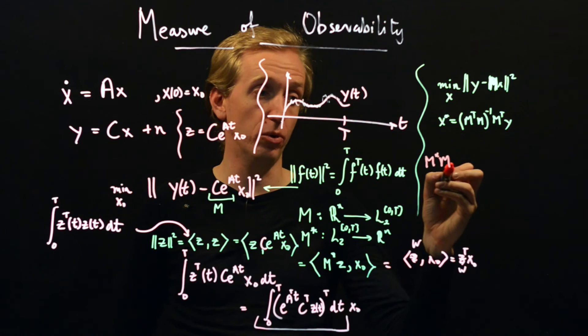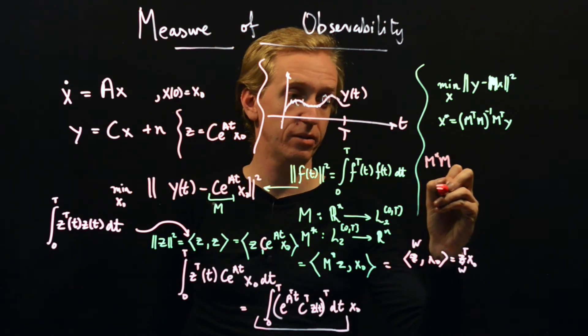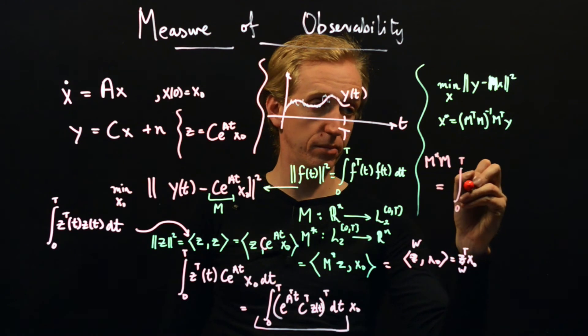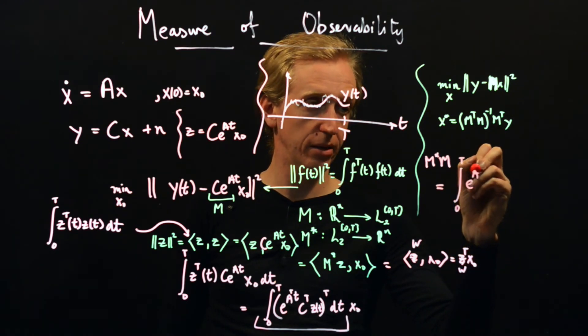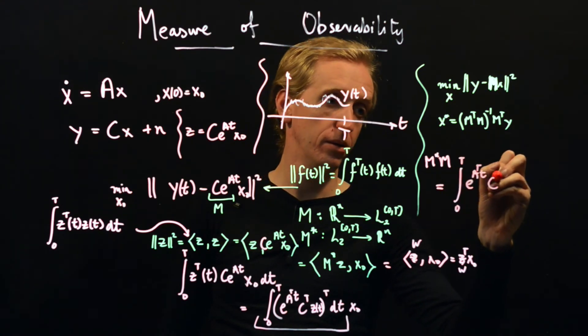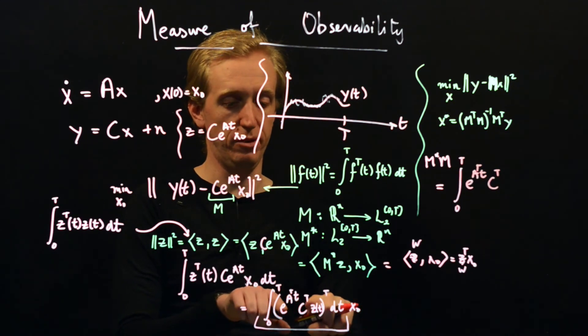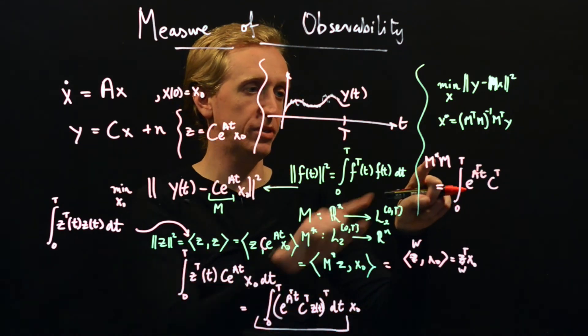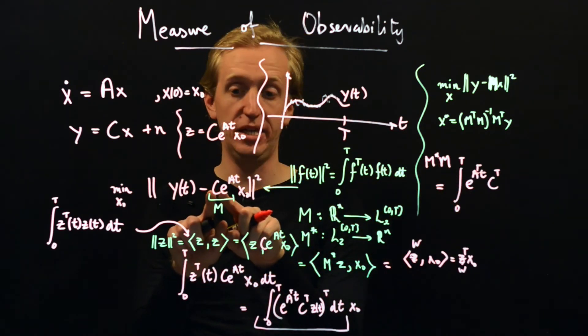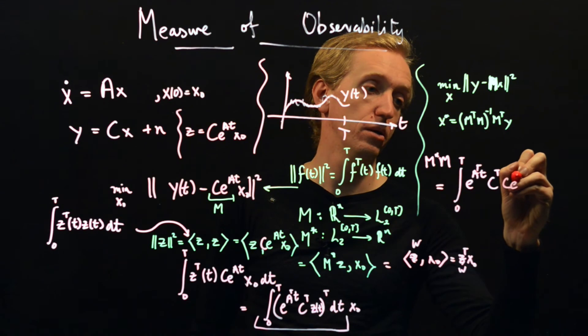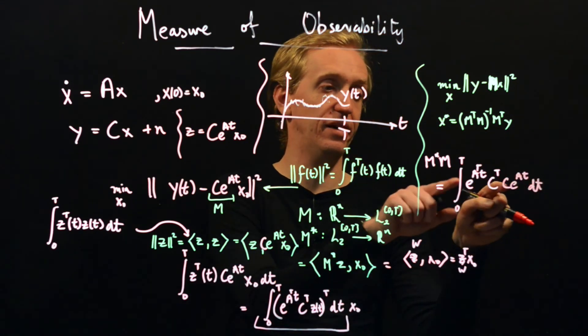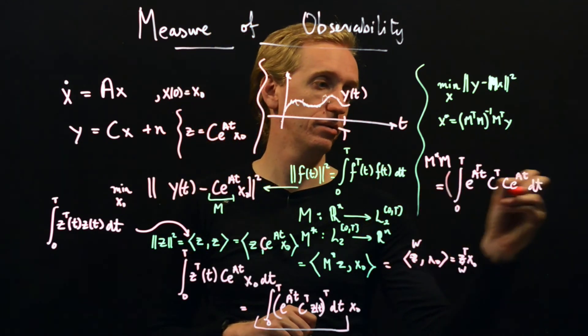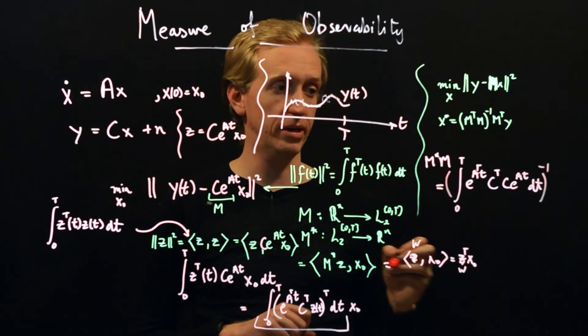So this is m star z. So m star z is this integral here. And if you think back to the controllability example, this is exactly the form of the linear operator that we had in that example as well. So m star takes an input function and produces a vector, and it produces it according to this integral. So we found m star. This whole thing is m star z. And so in order to compute our least squares solution, we just need to find m star m. But we now know what m star and m are. So this is m star, is the integral 0 to t of e to the a transpose t c transpose, and then the vector. And what's the input vector to the linear operator? And what is that? Well, the input to this linear operator is just m, and m is c e to the a t.